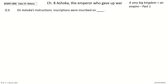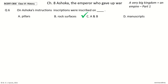Question 6: On Ashoka's instructions, inscriptions were inscribed on — blank. The options are: pillars, rock surfaces, A and B, manuscripts. The answer is A and B. So on Ashoka's instructions, inscriptions were inscribed on pillars and rock surfaces.